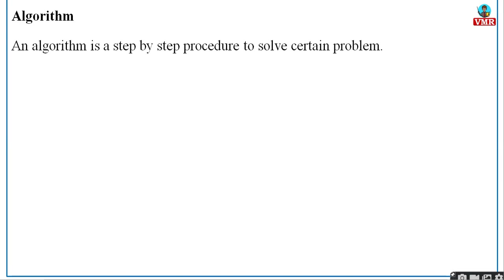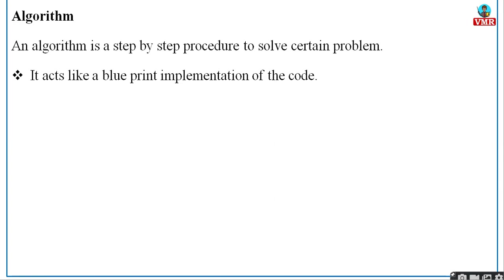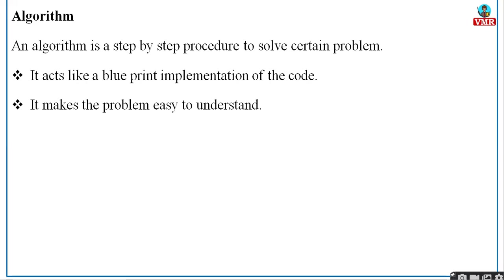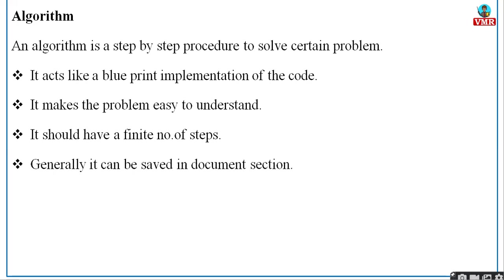An algorithm is a step-by-step procedure to solve a certain problem. It acts like a blueprint for implementation of the code. When you're trying to write code, first you'll write an algorithm — what are the steps, what are the requirements, when you want to repeat some set of statements, when to close that repetition. It makes the problem easy to understand because you are dividing it into small parts, and it should have a finite number of steps. It can also be saved in the documentation section.